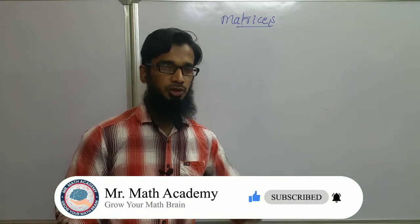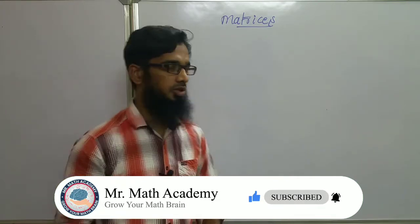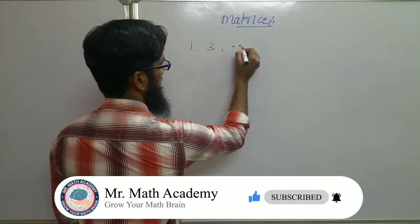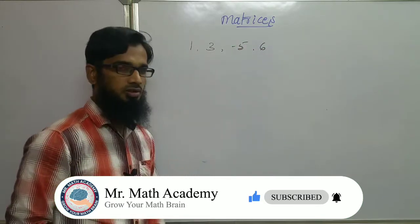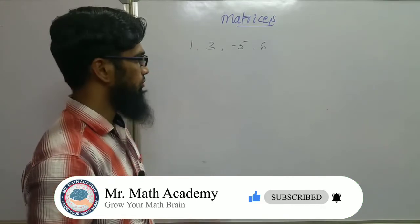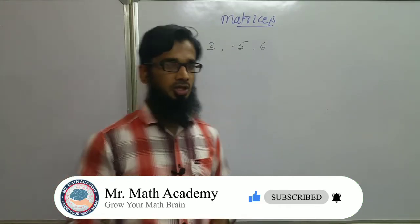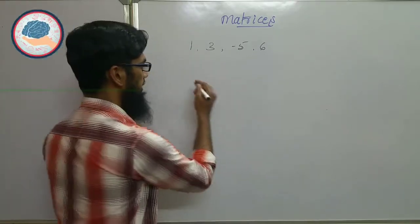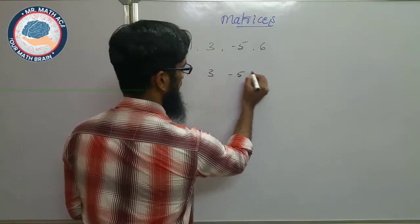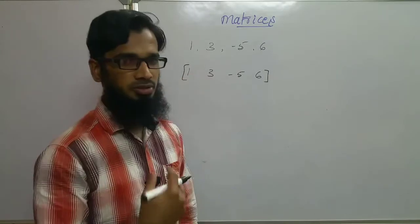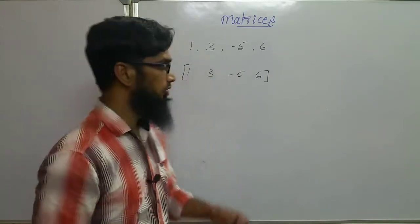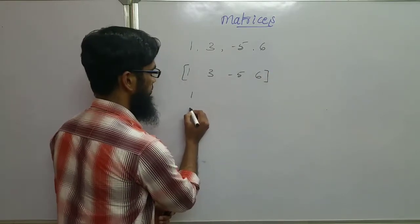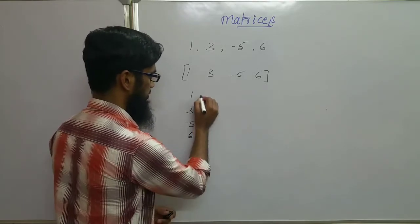Before going to the introduction, let us consider some numbers: 1, 3, minus 5, and 6. These are four numbers. Now, how can I arrange these numbers in the form of a matrix? One method is to arrange them horizontally as 1, 3, minus 5, 6.